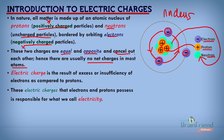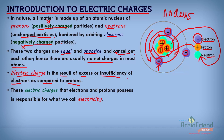Electric charge, therefore, is the result of excess or insufficiency of electrons as compared to protons. The proton is more or less tied down to the neutrons in the nucleus and is not as mobile. The mobile particle within the atom is the electron. Electrons are mobile and can interact with other electrons from other atoms. That's why when we talk about charges, we base our discussions on the electrons — excess or insufficiency of electrons results in electric charge.